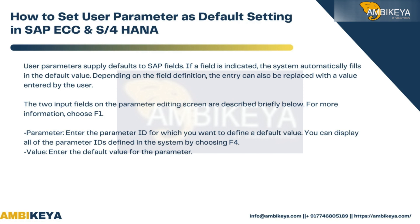User parameters supply defaults to SAP fields. If a field is indicated, the system automatically fills in the default value. Depending on the field definition, the entry can also be replaced with a value entered by the user. The two input fields on the parameter editing screen are described briefly. Parameter: enter the parameter ID for which you want to define a default value. You can display all parameter IDs defined in the system by choosing F4.